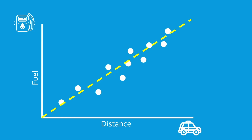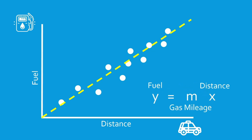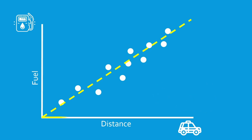Once we find the line, it gives us an equation: y equals mx plus b. In this case, b is zero, x is our trip distance, y is the gas used, and m is our car's gas mileage. We can then use this equation to predict about how much gas we can expect to use on our next trip.